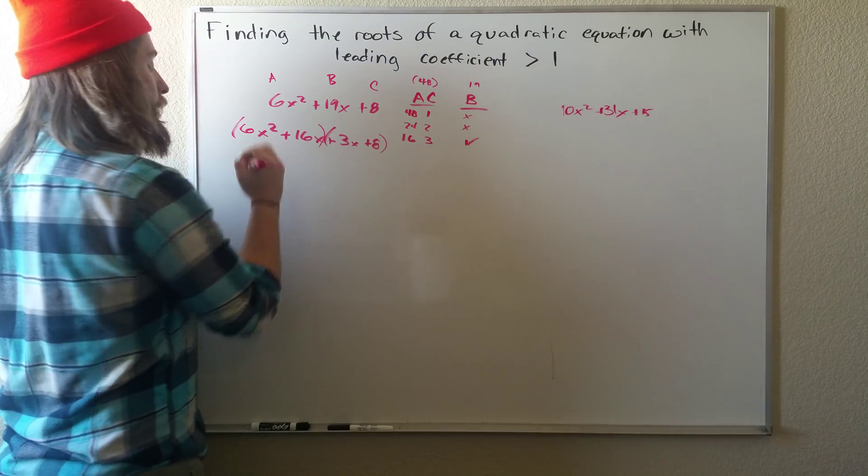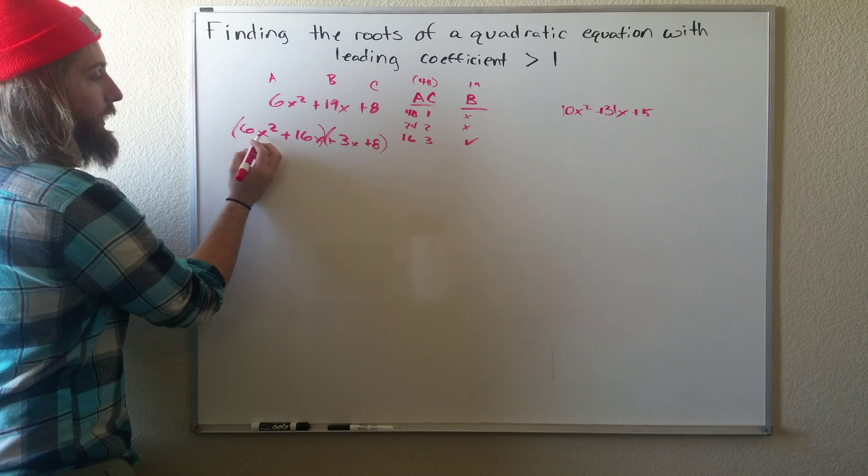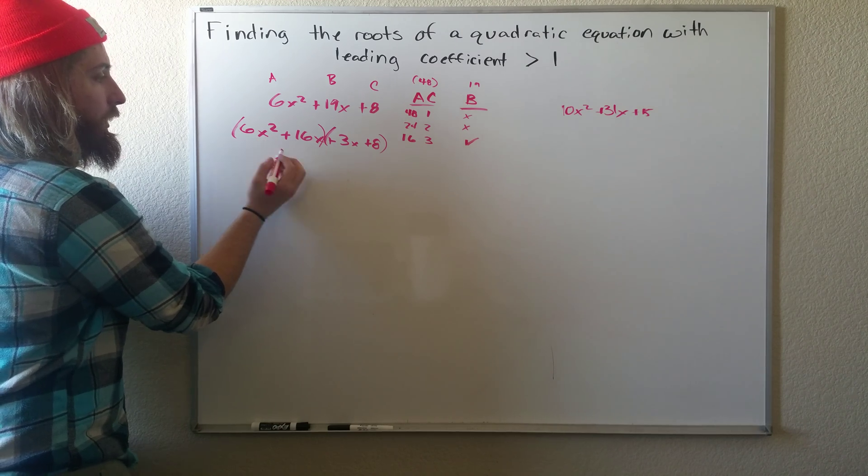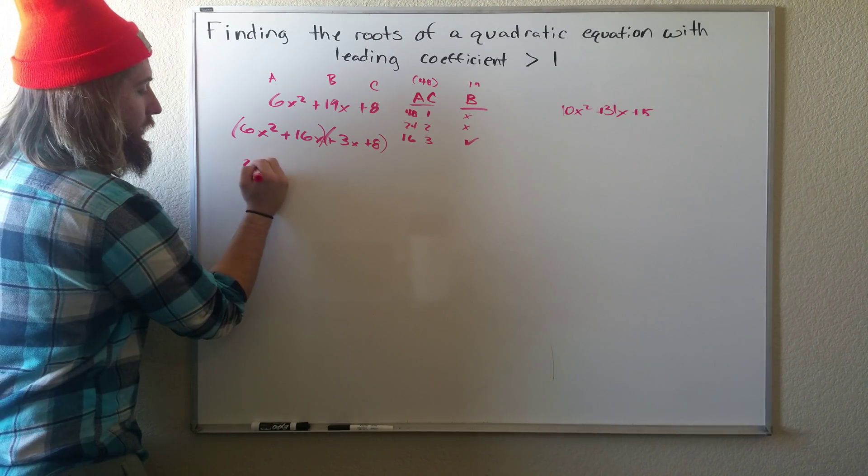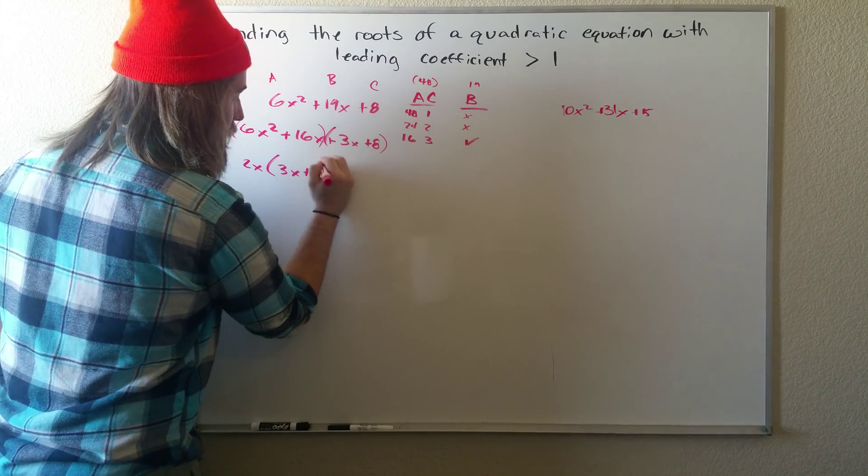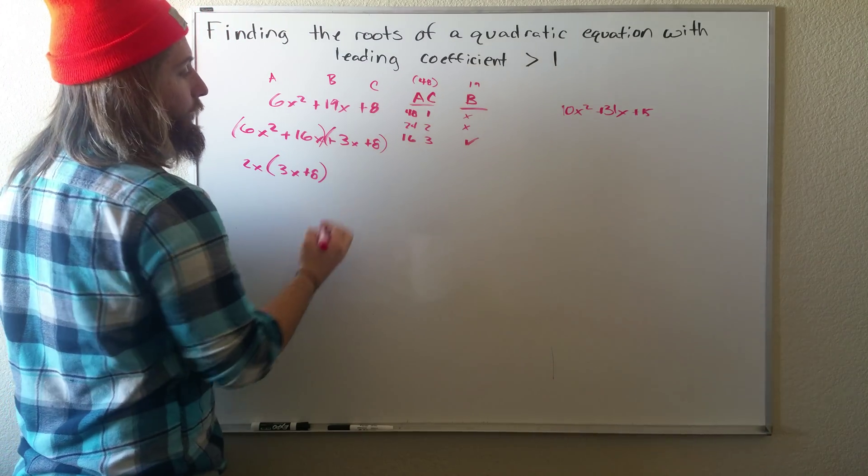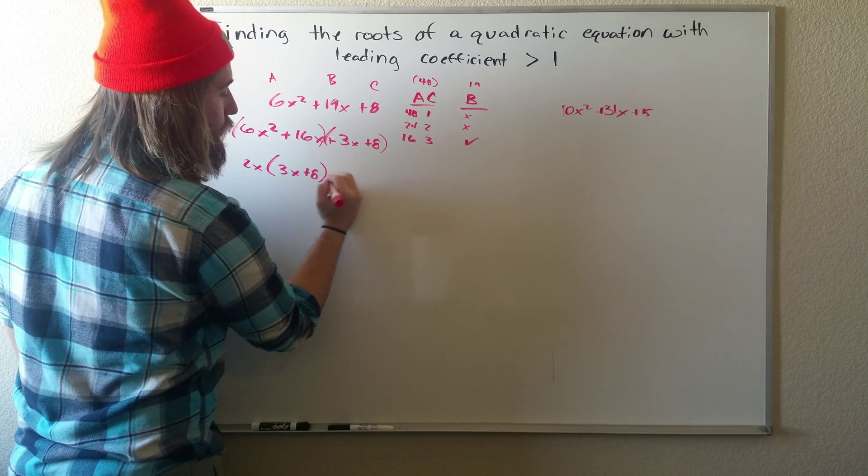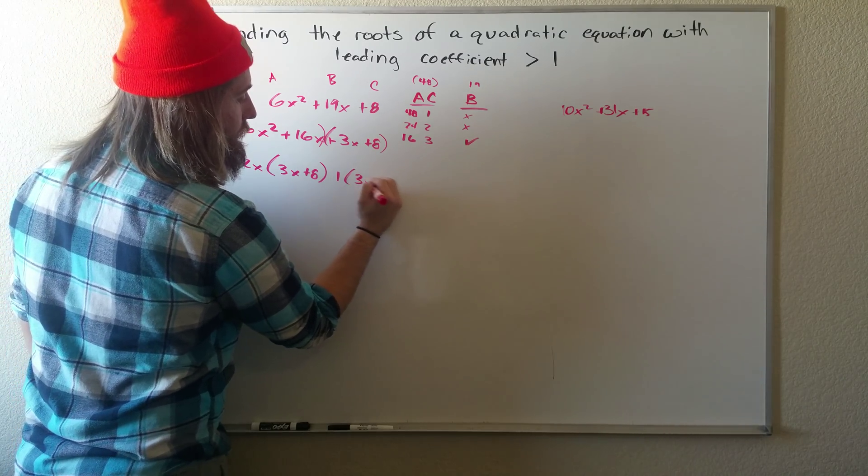And now we'll just break it up into groups. So the like term we can pull out of this one is 2X. We get left over with 3X plus 8. And the greatest common factor we can bring out of this one is just 1. We have 3X plus 8 left over.